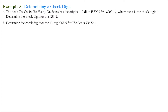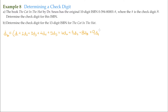The 10-digit ISBN uses the weighted scheme where D sub 10, the 10th digit (the check digit), equals the first digit plus two times the second digit, plus three times the third digit, plus four times the fourth digit, plus five times the fifth digit, plus six times the sixth, seven times the seventh, eight times the eighth, and nine times the ninth digit — all modulo 11.